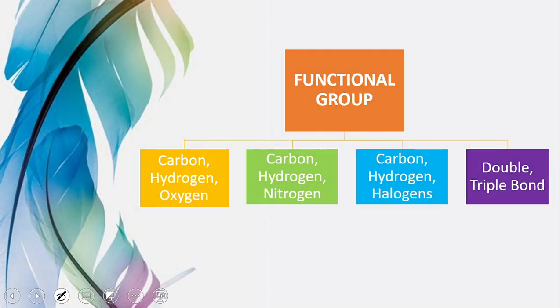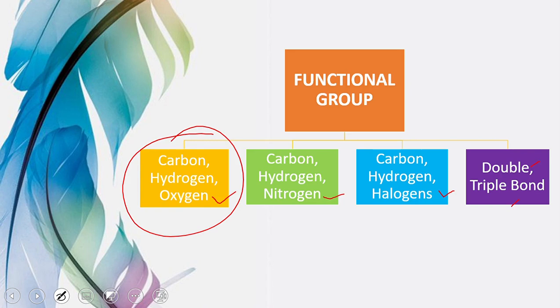Humare paas functional group ki different types hain depending upon kin atoms se yeh milke bana hai, ya double ya triple bond ki presence. To ab humare paas iski four different types hain: pehli hai the presence of carbon, hydrogen and oxygen. The other types are with nitrogen, with halogen, and the presence of double and triple bonds. Today we'll study the first one and in the next lecture we will study all these three.